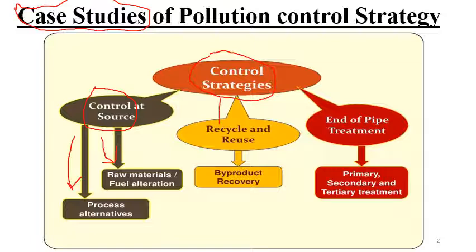Next, you can do recycle and reuse, which will lead to byproduct recovery so that you can use it again for a different process. And the last one is end-of-pipe treatment — it means that you are generating waste in your industry and then treating it with the help of primary, secondary, and tertiary treatments.